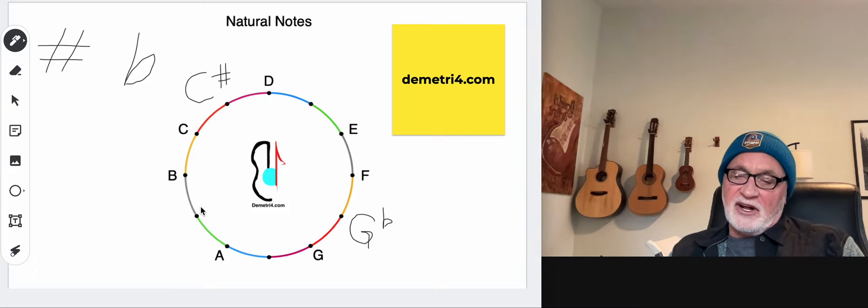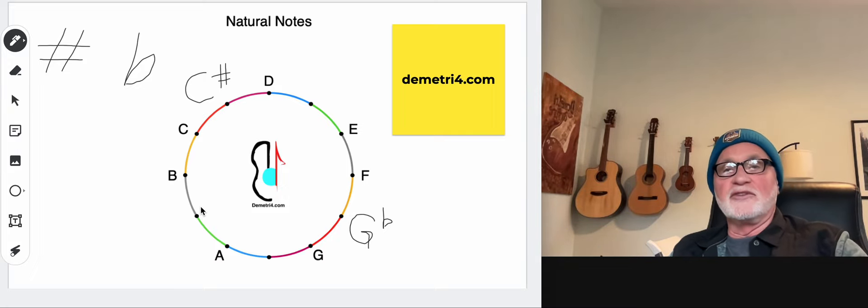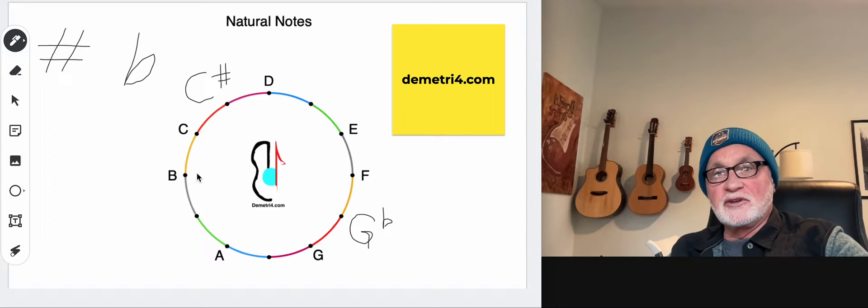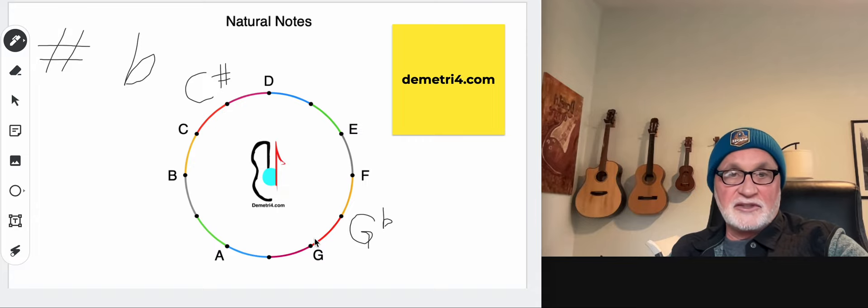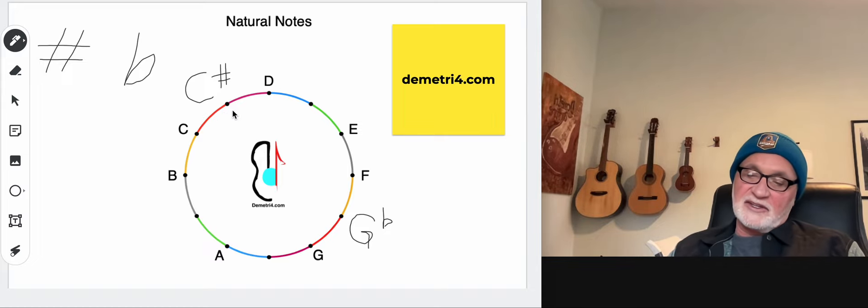And the flat sign indicates altered notes a half step lower. So we want to alter them the other way. We could go B flat, A flat. We did G flat. Here's E flat and D flat. So that's how we get to those blank dots. We use accidentals.